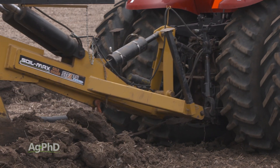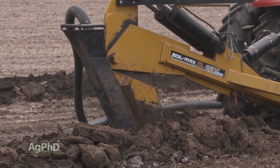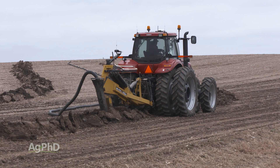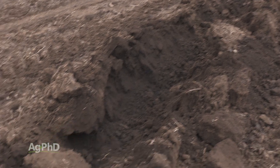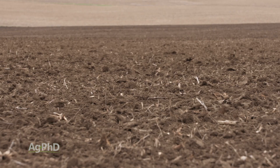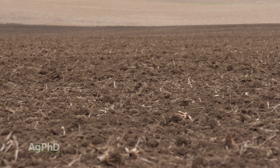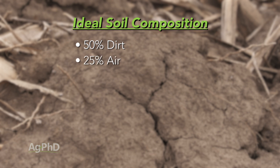On the other hand, what we talk about most often here on the show is subsurface drainage, or we sometimes refer to it as internal drainage. This is moving the water that's below ground a little bit deeper into the soil profile. If you've ever taken an agronomy class, on day one they probably told you that ideal soil composition is roughly 50% dirt, 25% air, and 25% water.